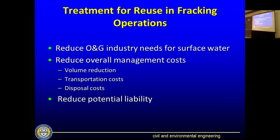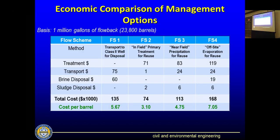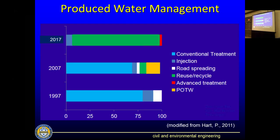Treatment for reuse in fracking operations is a great idea — it reduces liability and the volume of water needing disposal. The rough costs for various options range from about $3 to $7 per barrel: Class 2 disposal well, minimal field treatment for reuse, more extensive precipitation treatment for NORM removal, or other technologies already in play. This is based on techno-economic analysis with no market conditions built in. Pennsylvania shifted from mostly conventional treatment in 1997, tried POTWs in 2007, and now 90% is being reused, with a small amount going to Ohio for disposal and some advanced treatment like mechanical vapor recompression to recover clean water.